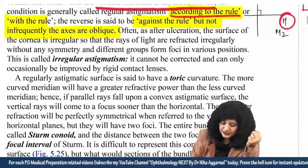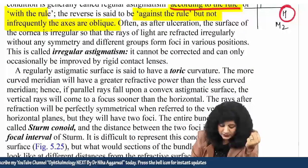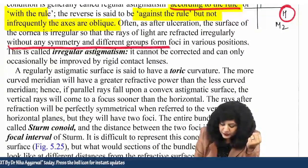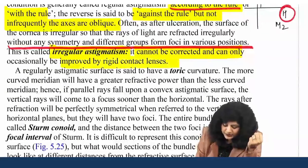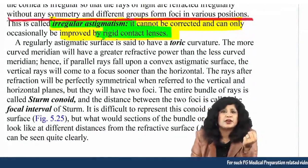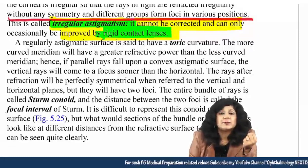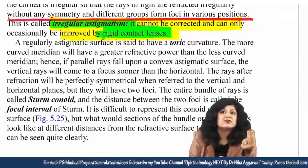After ulceration the surface of the cornea may be irregular, so rays of light are refracted irregularly without any symmetry and different groups form foci in various positions — this is called irregular astigmatism. It cannot be corrected and can only be improved by rigid contact lenses, which have therapeutic importance in cases of irregular astigmatism.